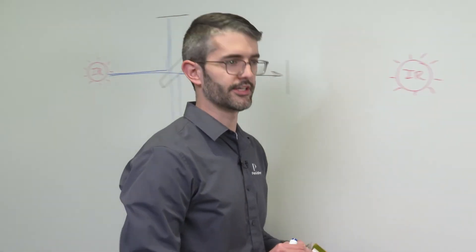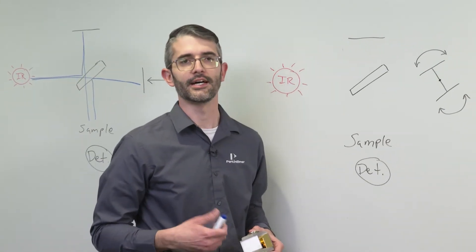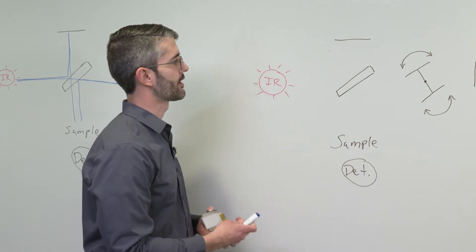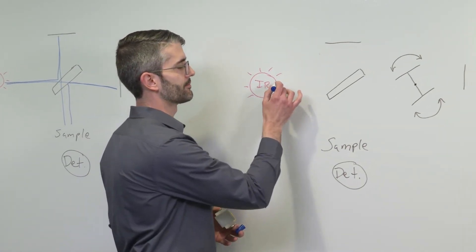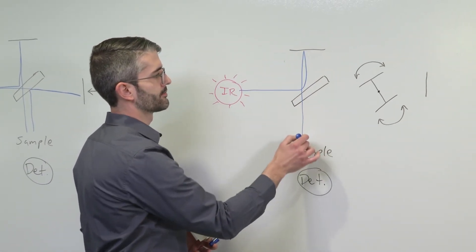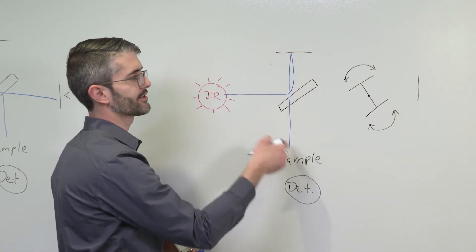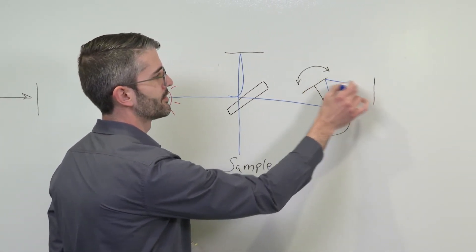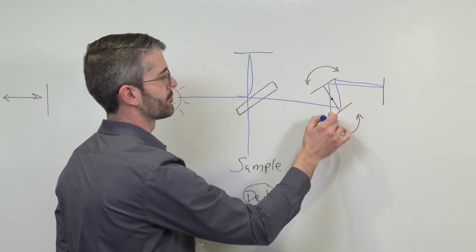For some years now, PerkinElmer has employed what is known as the Dynascan interferometer. In the Dynascan interferometer, the infrared light comes from the infrared source to the beam splitter, off the fixed mirror, and a portion of that light also travels through the pivoting mirror pair.